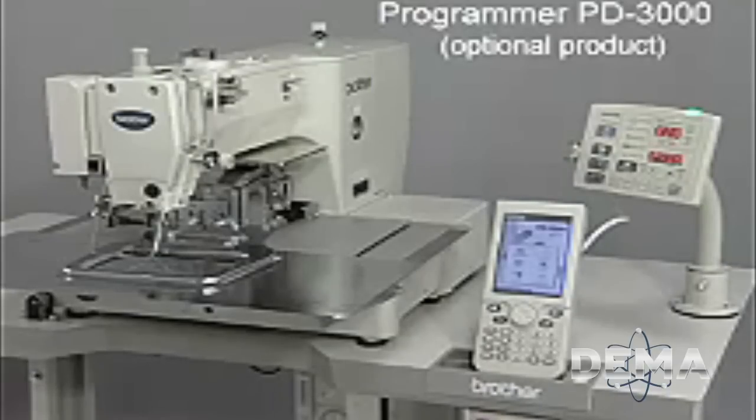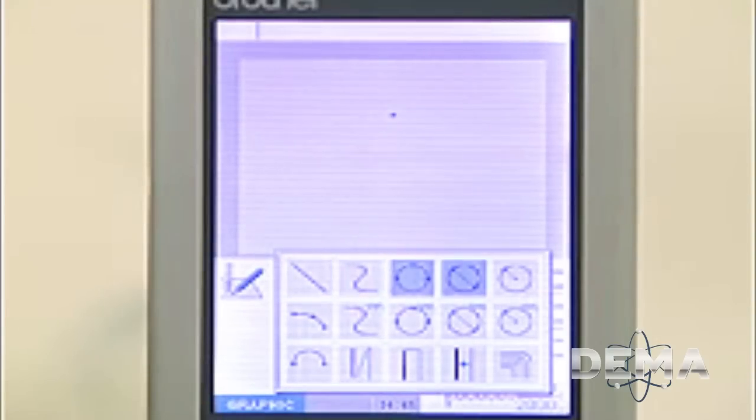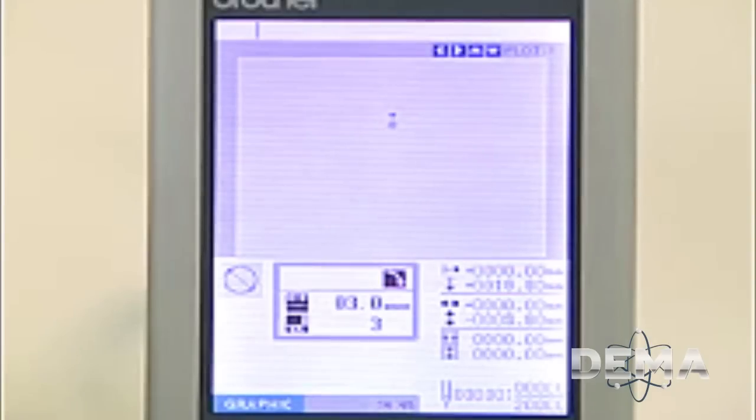With the BAS311G and 326G, a programmer is available for sewing data creation. It provides programming while allowing the shape of the pattern to be checked on its large, easy-to-view color LCD.